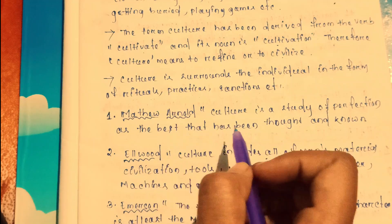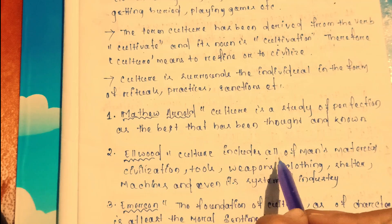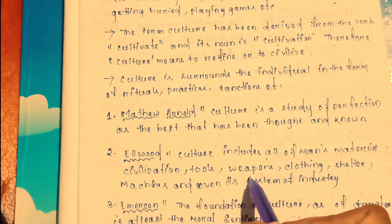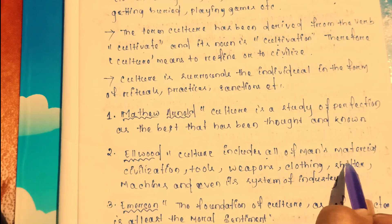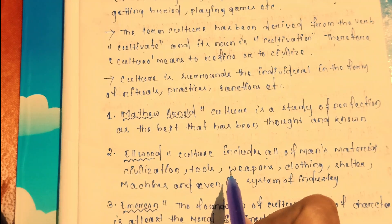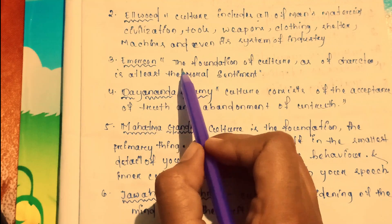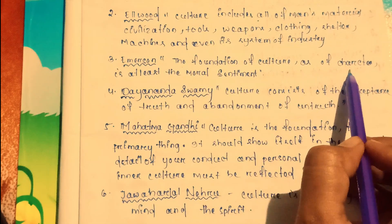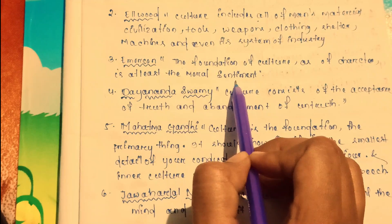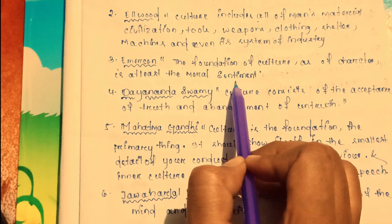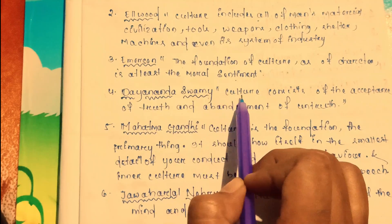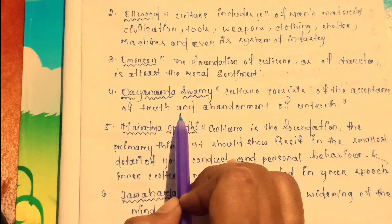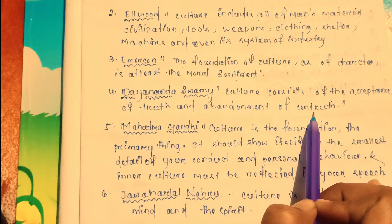Matthew Arnold also said culture includes all of man's marriage, civilization, tools, weapons, clothing, shelter, and machines, and even its system of industry. The foundation of culture as character is at least the moral sentiment. The culture consists of the acceptance of truth and abundance of untruth.